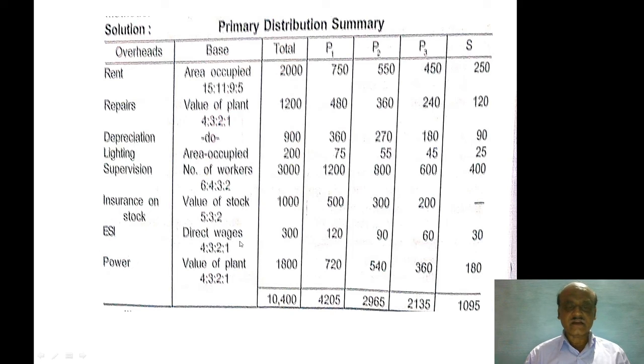For employer's liability insurance, the basis is direct wages ratio: 4 is to 3 is to 2 is to 1.